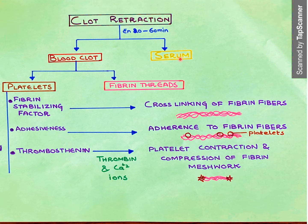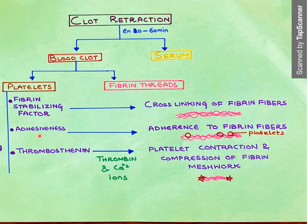The serum is separated from the clot. This smaller, retracted blood clot has been formed with the help of platelets. For clot retraction, the platelets act upon the fibrin threads and secrete fibrin stabilizing factor that produces cross-linking of the fibrin fibers.